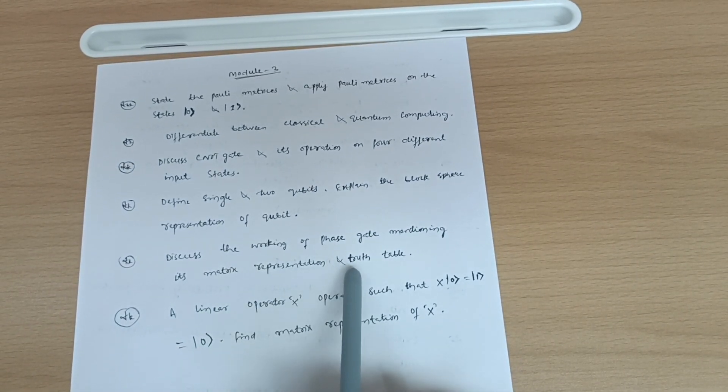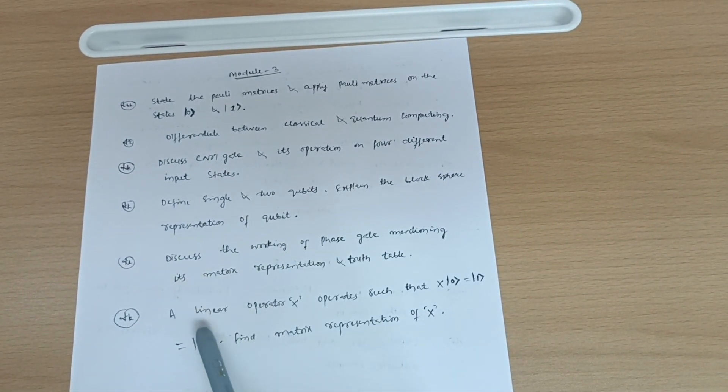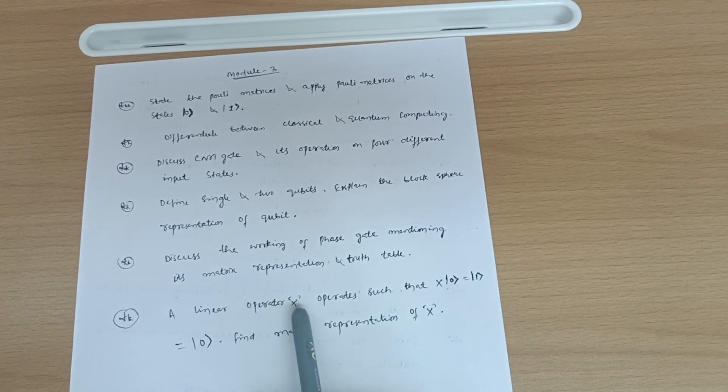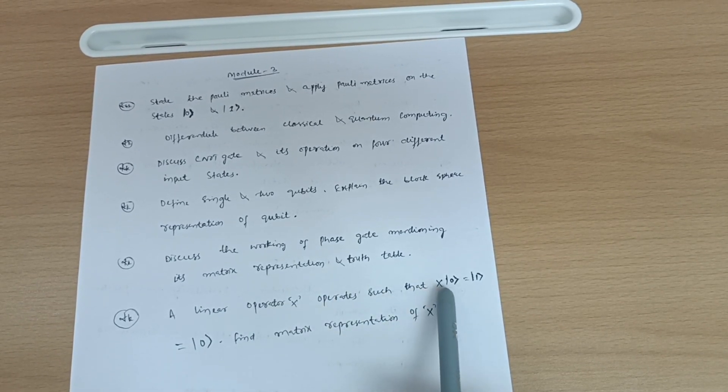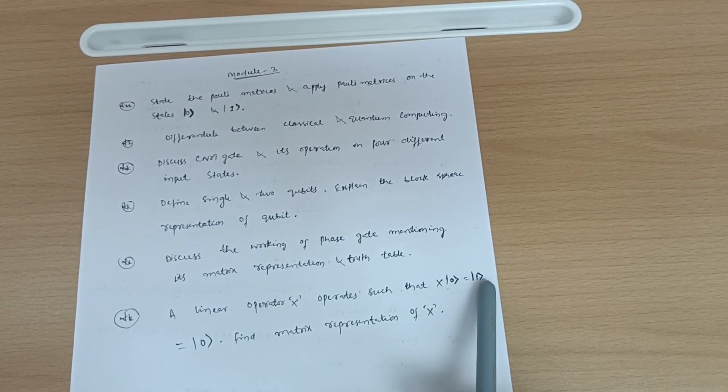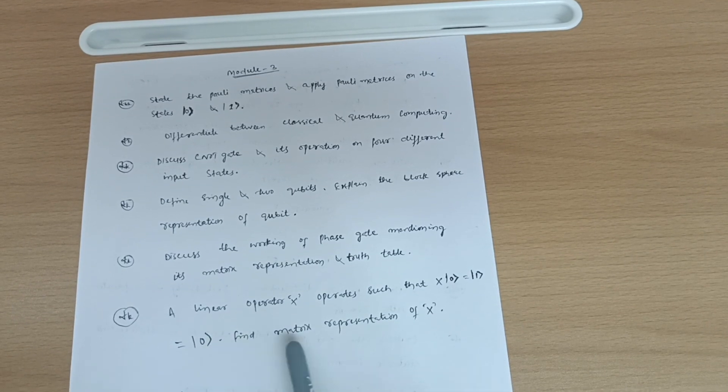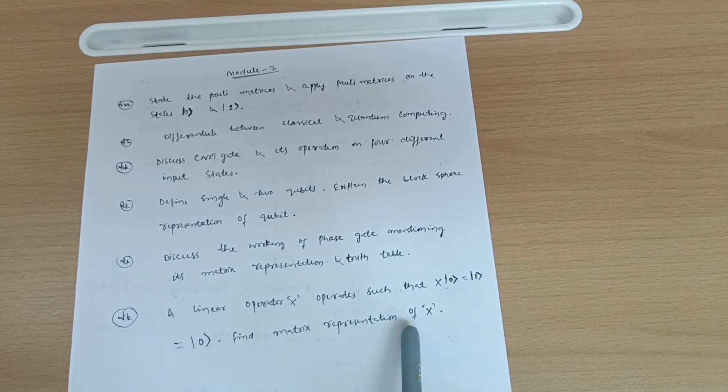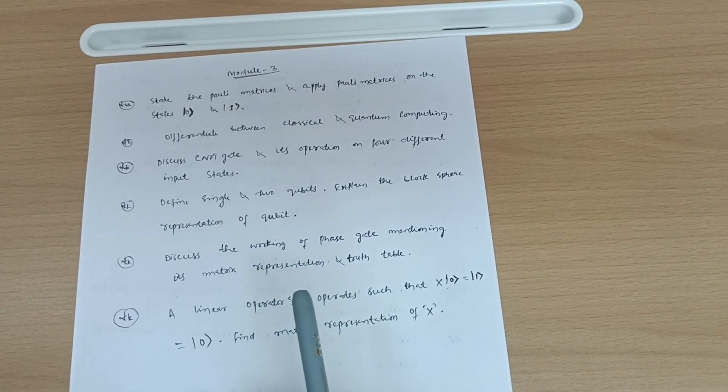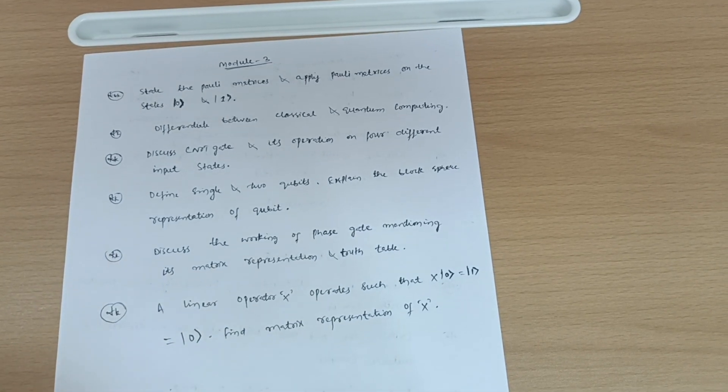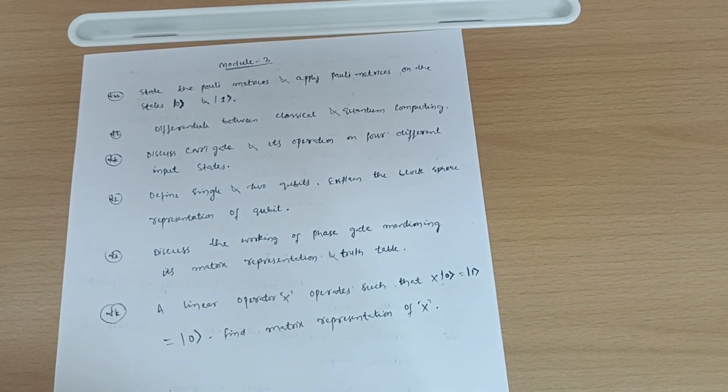Discuss the working of phase gate mentioning its matrix representation and truth table. Last, that is, a linear operator X operates such that X zero ket is equal to one ket is equal to zero ket. Find matrix representation of X. I hope you will cover this much portion whatever I have mentioned in this video.